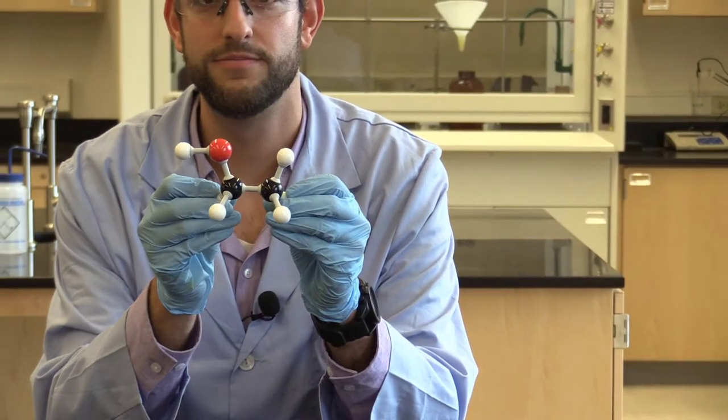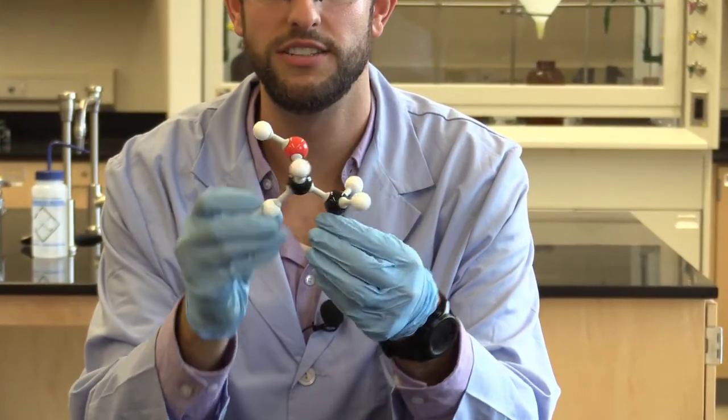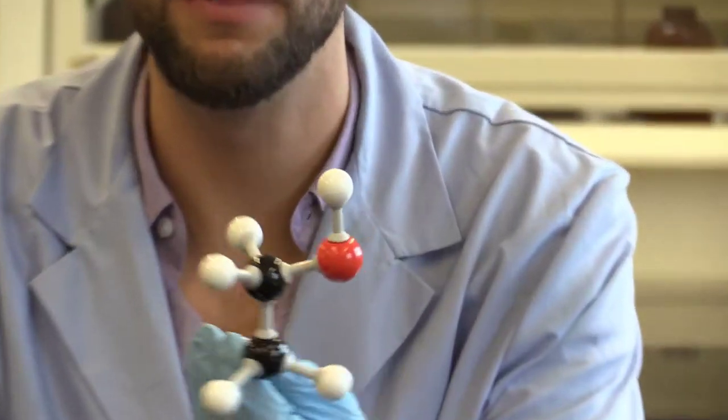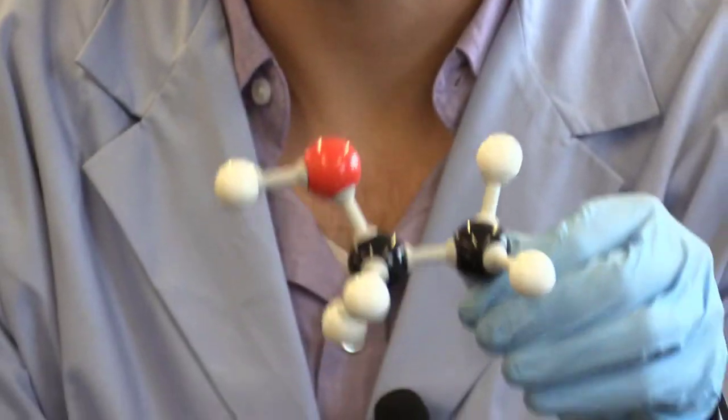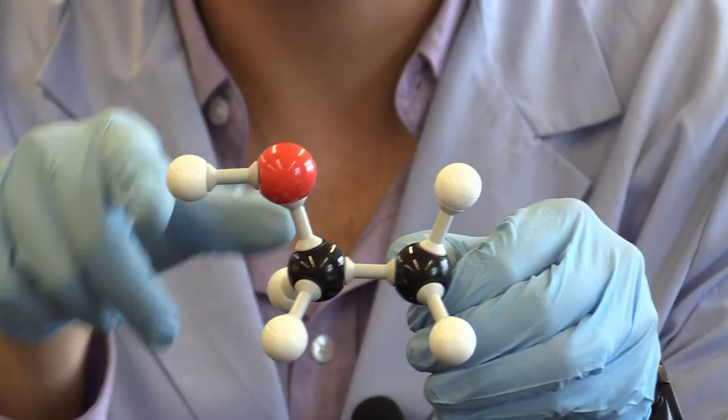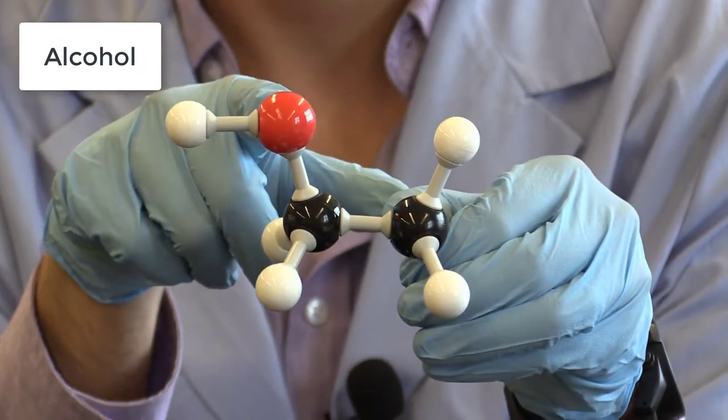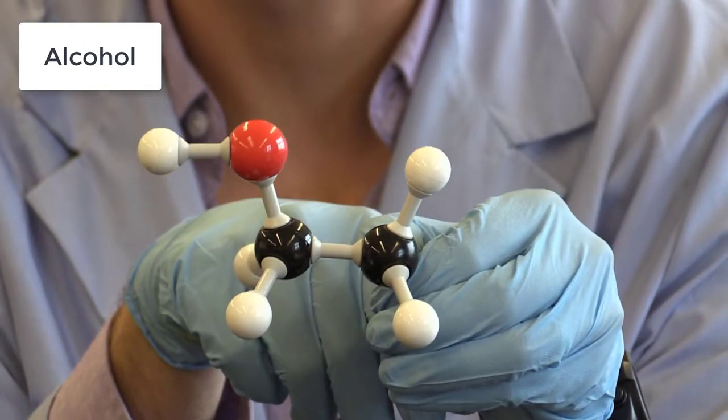Alright. Here's our next structure. This should be an easy one. This is a lot of people's favorite structure. This is ethanol. And so our alcohol group right here on the end. So we have our carbon bonded to an oxygen. And the oxygen is then bonded to the hydrogen.